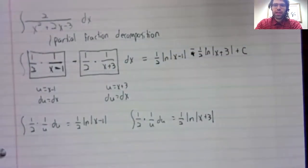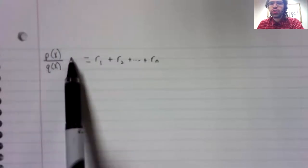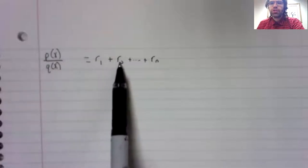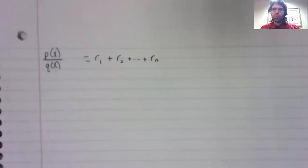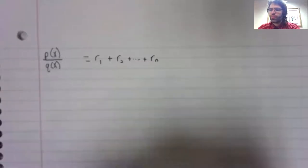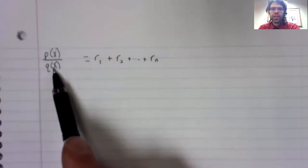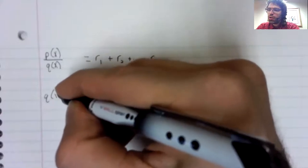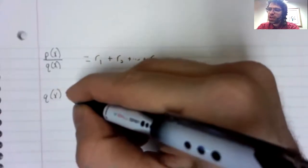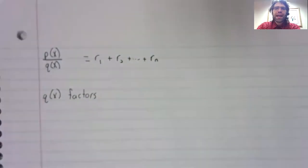Let's outline it. Here's the situation we are in: we've got a rational function, and we're trying to write it as the sum of simpler rational functions. The way we do this depends on the denominator q(x). The fundamental theorem of algebra tells us that q(x) factors.